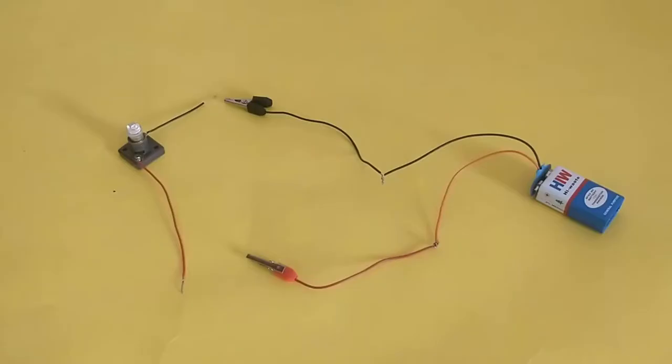Connect the battery snap to the 9-volt battery and connect the crocodile clips to the battery snap as shown. Mount the torch bulb on the torch bulb mount and connect the insulated wires to the mount's terminals.